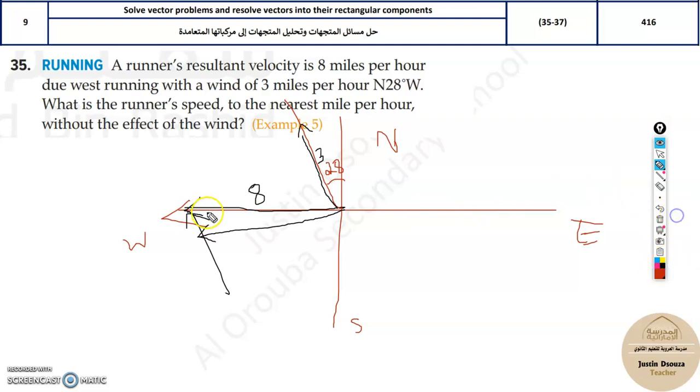Now we need to find this magnitude. Let me write the known details. This is 3, that's the wind, just translated. If we know this is 28, then we can also find this. That would be 62.